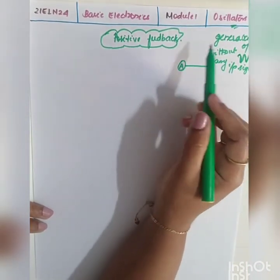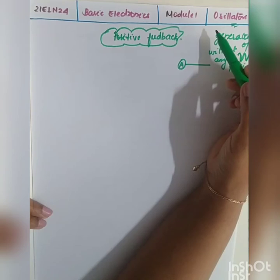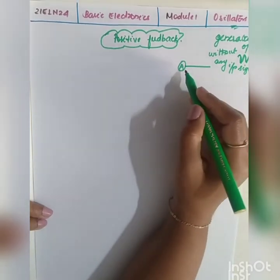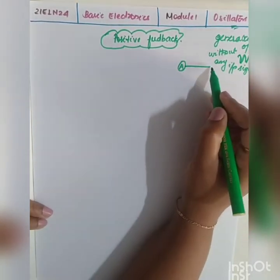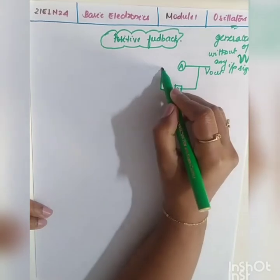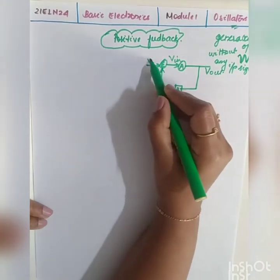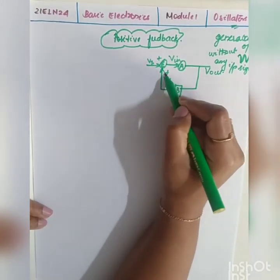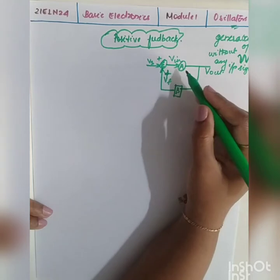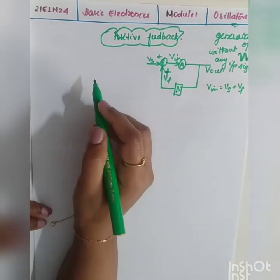Oscillators always use positive feedback, whereas amplifiers use negative feedback. Positive feedback means that a portion of the output is fed back to the input such that the overall input increases or reinforces the input. So V_in will be equal to V_s plus V_f — that is called positive feedback.